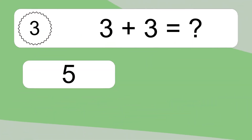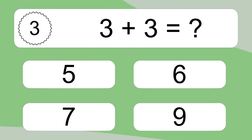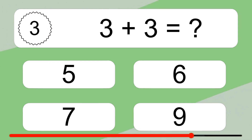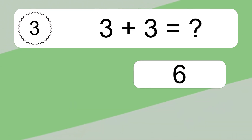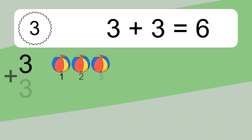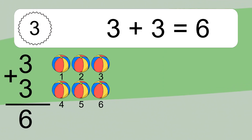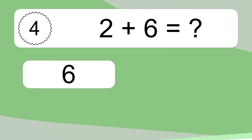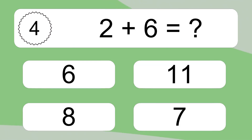3 plus 3 equals what? 3 plus 3 equals 6. Let's count it. 1, 2, 3, 4, 5, 6.